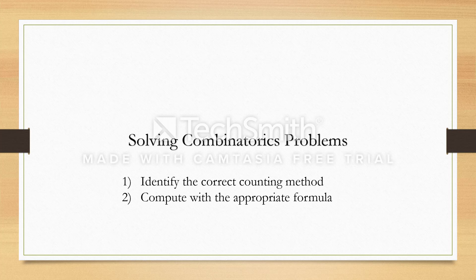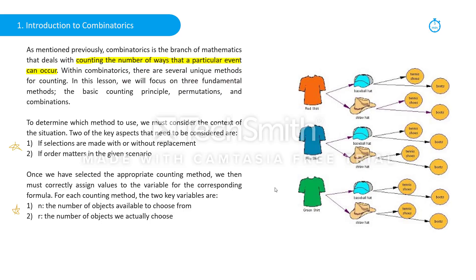So first, we need to be able to look at the problem and identify which type of counting method the problem calls for. Once we have figured that out, we need to use the appropriate formula and compute our answer using factorials.